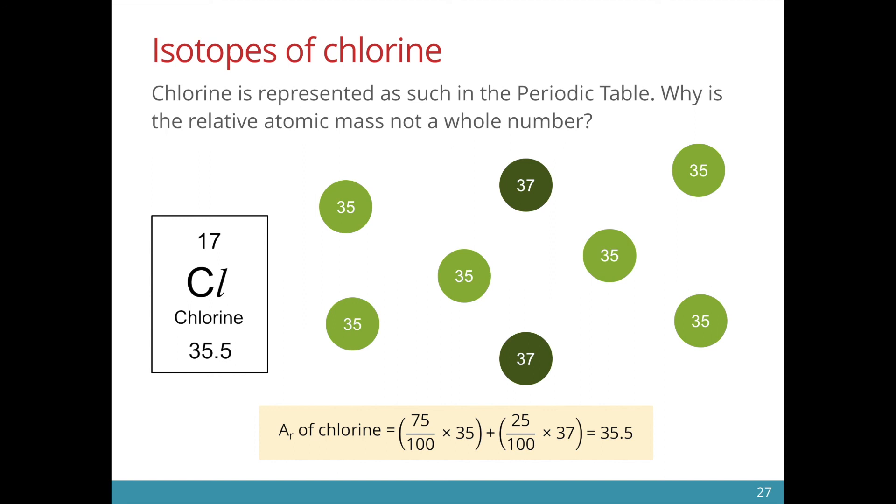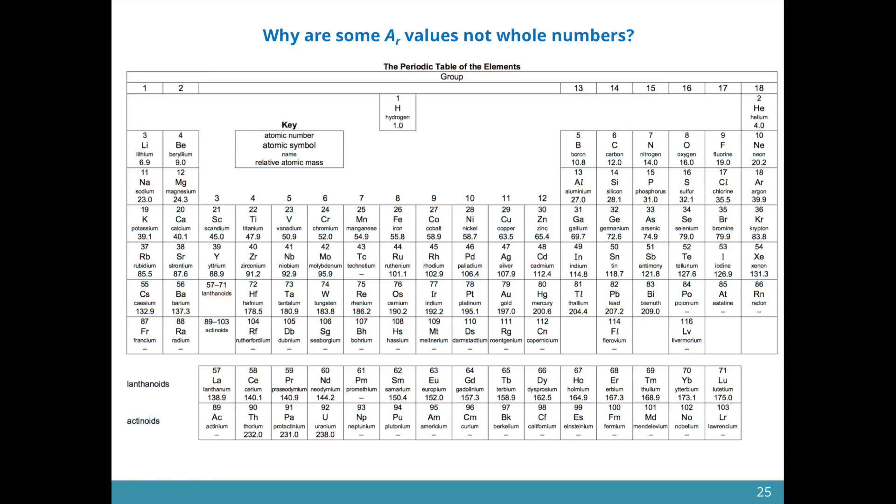It turns out that in the O and N level syllabus, chlorine seems to be the only one with a mass number that is 35.5. But if you were to go online to search for other versions of the periodic table, you will find that other elements also have a relative atomic mass that is not a whole number.